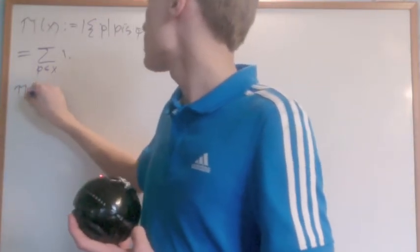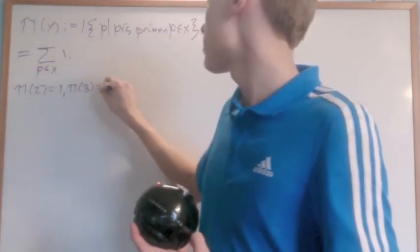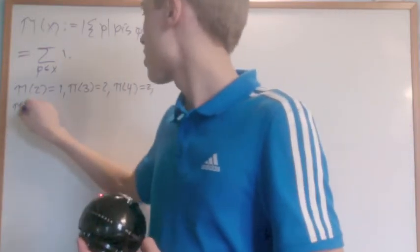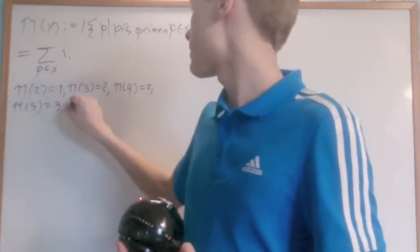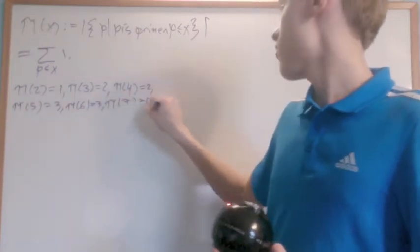Now, I'll go ahead and list out a few values. π(2) = 1, π(3) = 2, π(4) = 2, π(5) = 3, π(6) = 3, π(7) = 4.